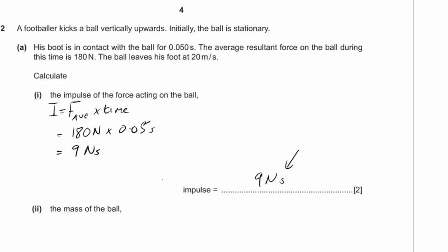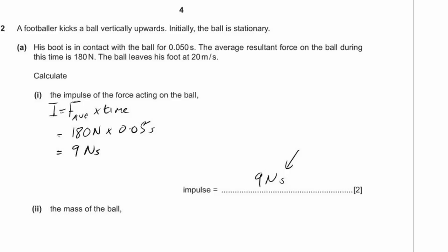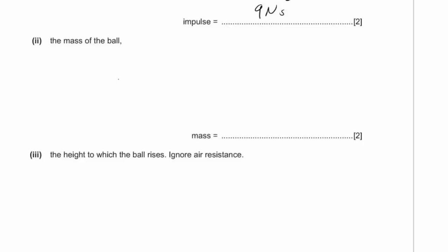Remember the units — if you're unsure, just leave the units from the calculation in. In this case, it's newton seconds. For the mass of the ball, we use F = m × change in velocity / change in time, which rearranges from F = ma.